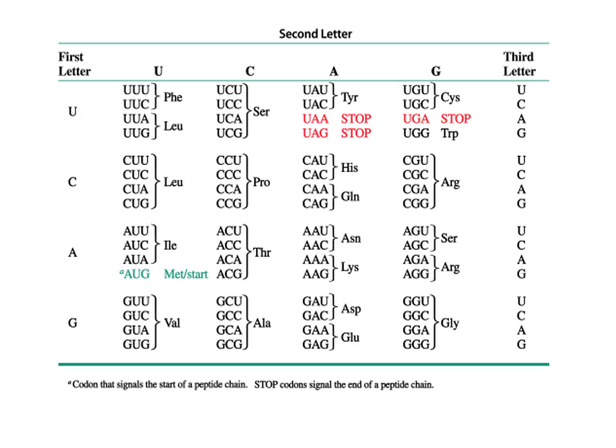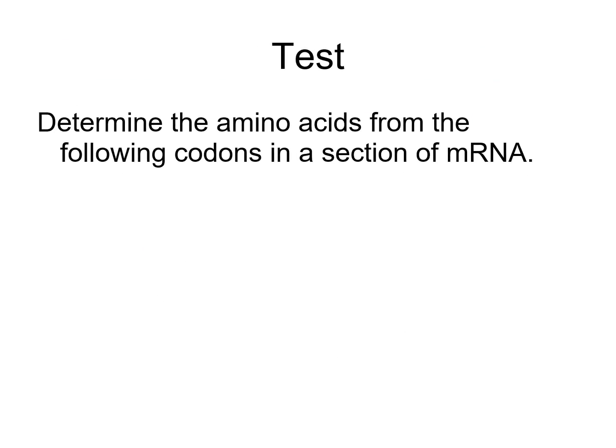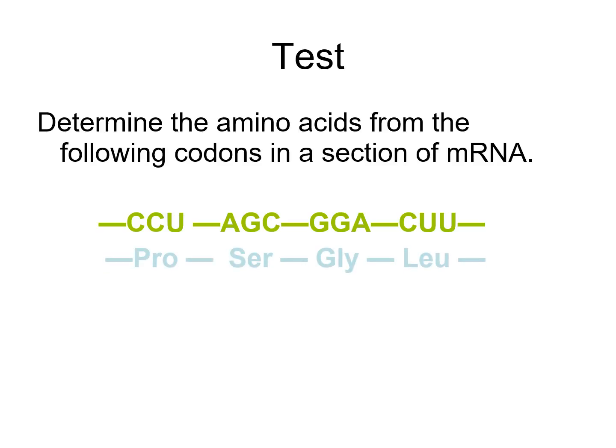Using the codon chart: CCU corresponds to PRO (proline), AGC is SER (serine), GGA is GLY (glycine), and CUU is LEU (leucine). So a messenger RNA with the sequence CCU-AGC-GGA-CUU would be read by the ribosome to form the protein in the order PRO, SER, GLY, LEU.